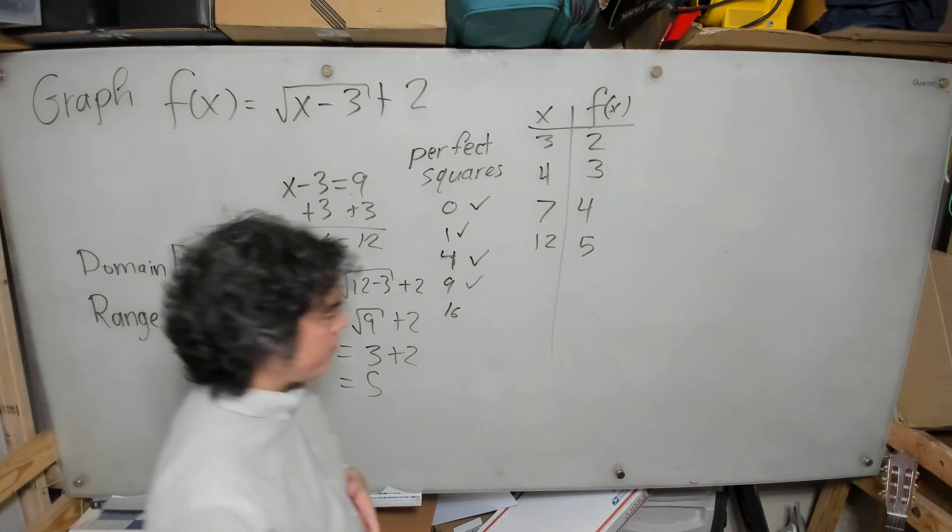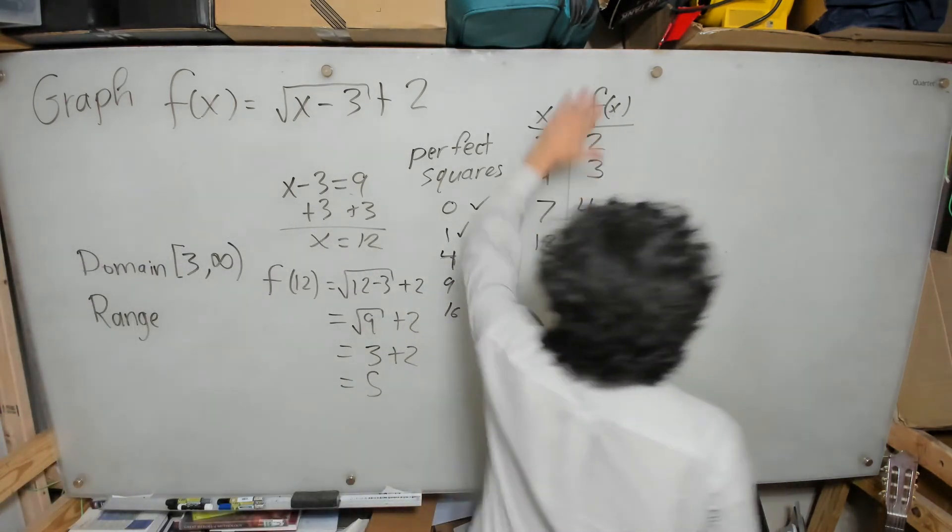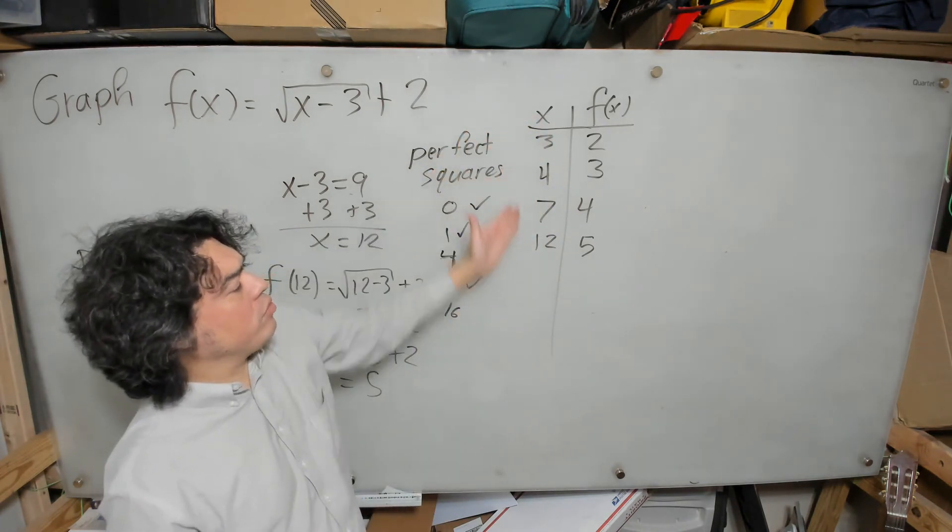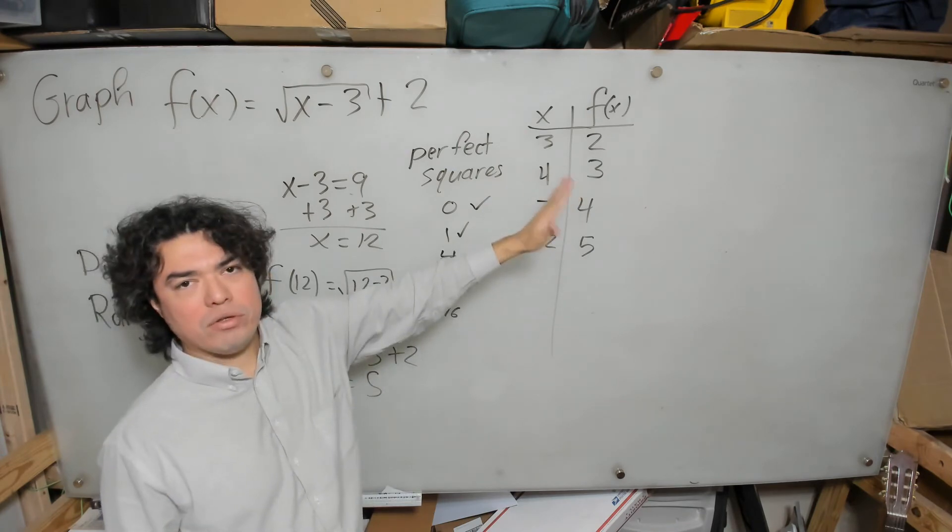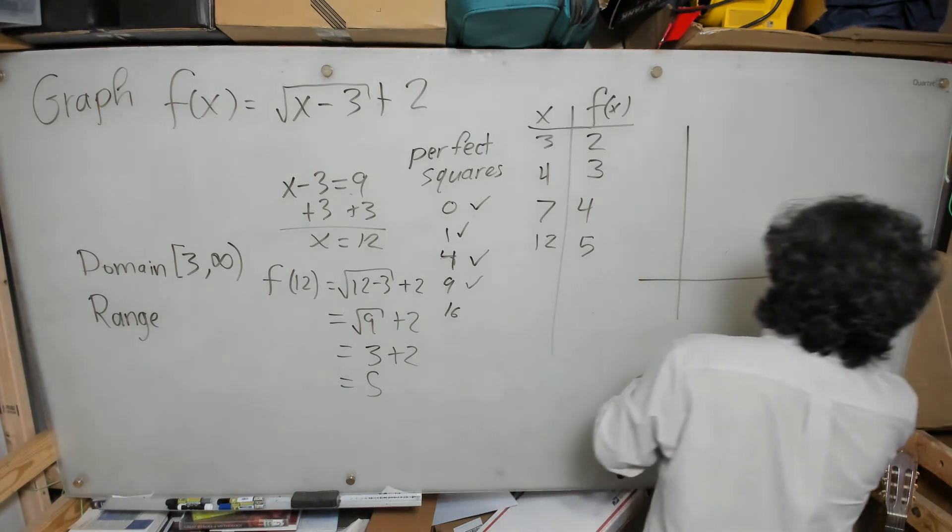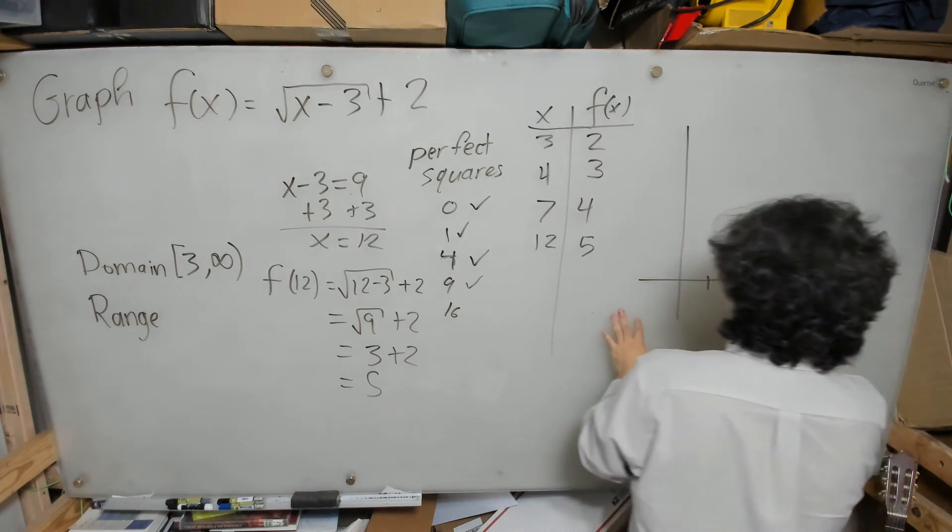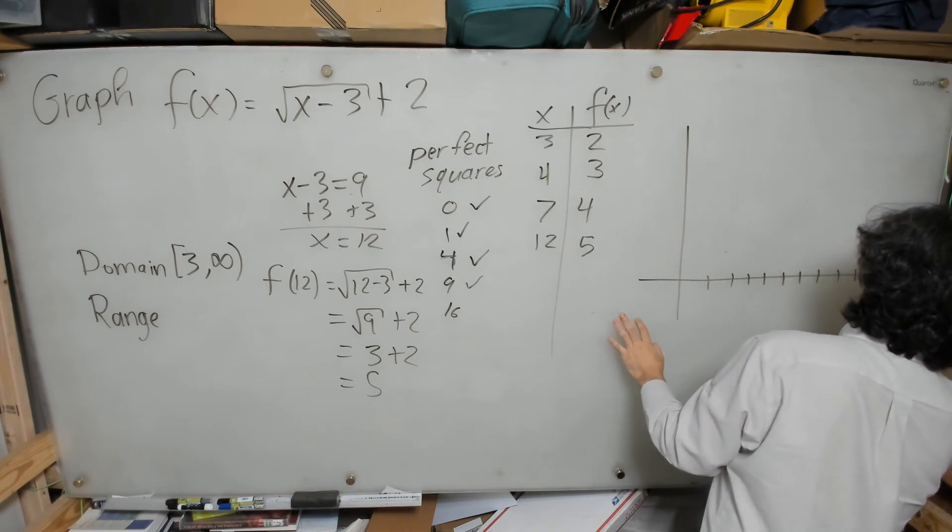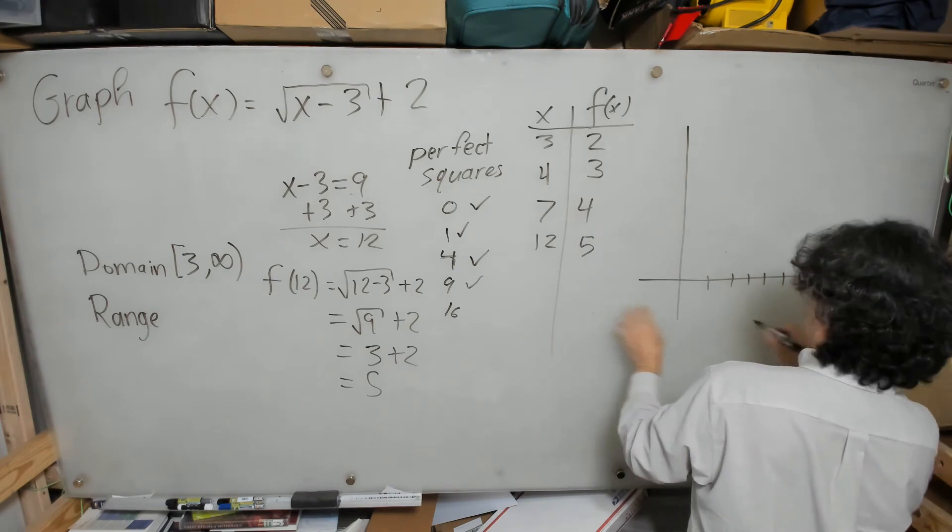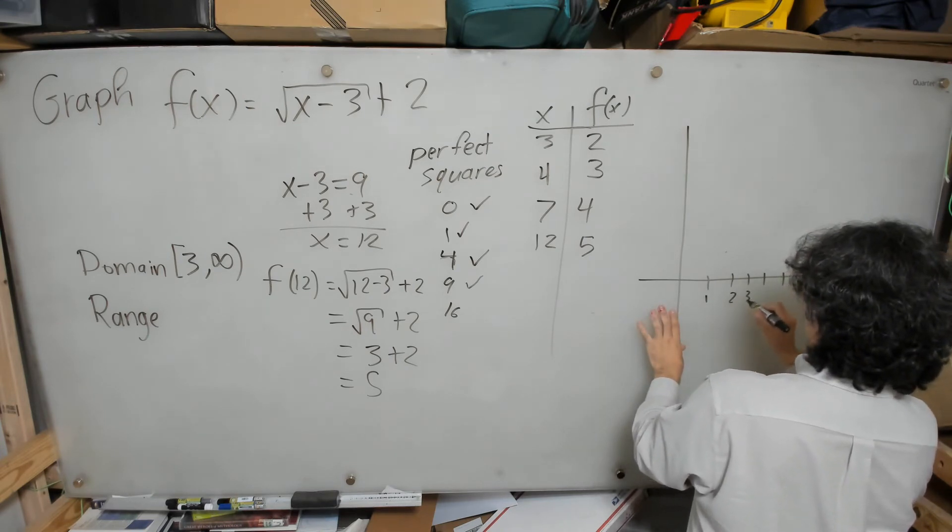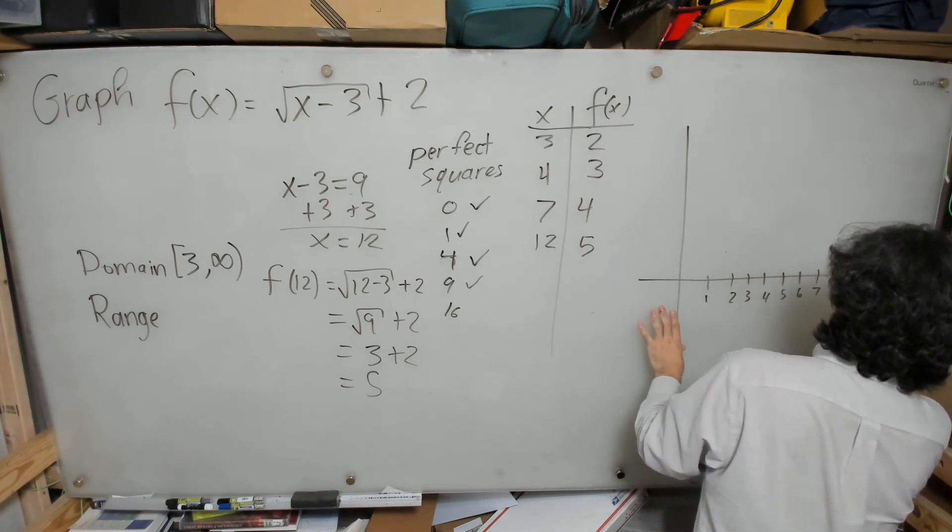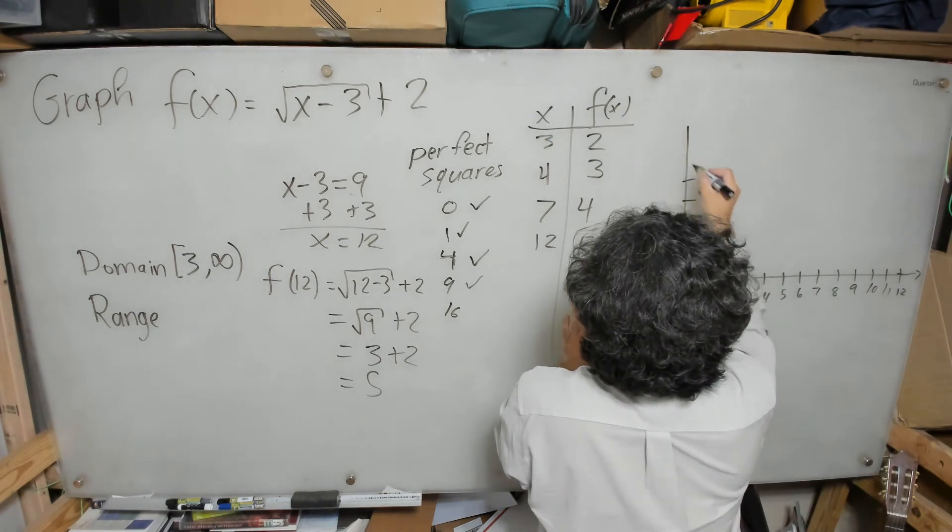And now let's graph it together. Now, as I look at these values, you can see that the portion of the x-axis that I want to focus on, I must have the values from 3 to 12. And for the y values, I only need like from 2 to 5. So let's do that here. Let's say 1, 2, 3, 4, 5, 6, 7, 8, 9, 10, 11, 12. And 1, 2, 3, 4, 5.